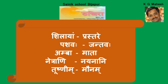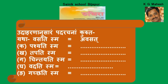Next exercise - Udaharananusaram Padarachanam Kurutam. As told at the beginning of the exercise, when Latlakara is used with the particle 'sma', it gives the meaning of past tense like Langlakara. Vasati means 'he lives' (present tense), but Vasati sma means 'he was living', same as Avasat. Both Lat with sma and Lang give the same past meaning.